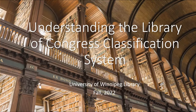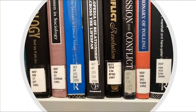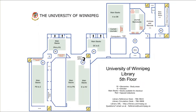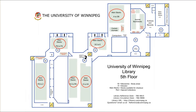Understanding the Library of Congress classification system. When you visit an academic library in a university or college, you will notice that the books on the shelves feature spine labels with a series of letters and numbers. This alphanumeric sequence is the Library of Congress classification system. Here at the University of Winnipeg Library, as you will see on this map, this sequence runs from the upper right of the map down to the lower left.